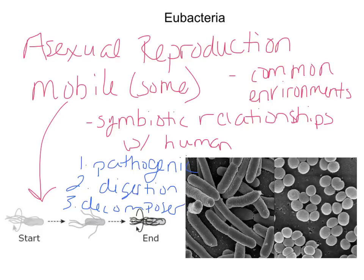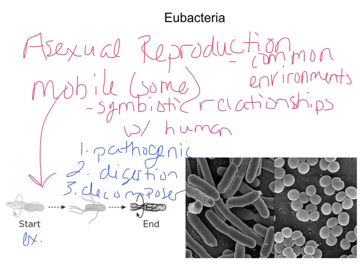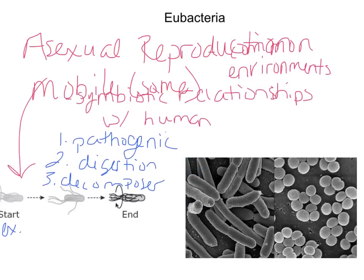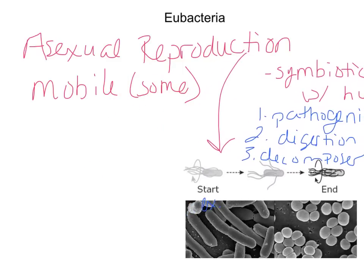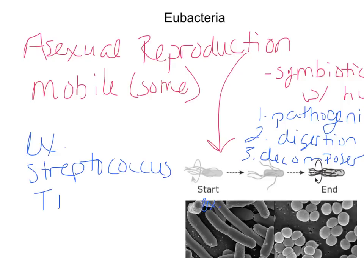Some examples of Eubacteria include Streptococcus, tuberculosis, and E. coli. There is good and bad E. coli — the E. coli you hear about on the news that causes food poisoning, and the E. coli that constantly lives in your intestines. Gonorrhea is also a bacterial disease. There is a wide variety of Eubacteria out there.